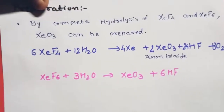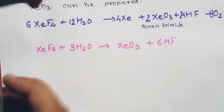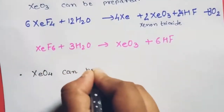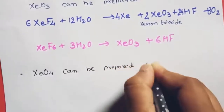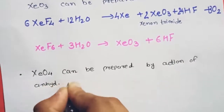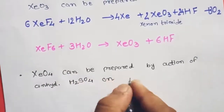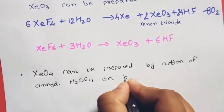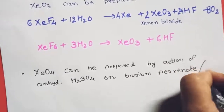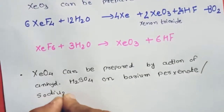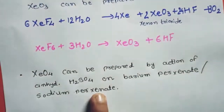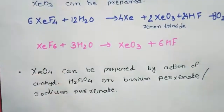Now let's look at the preparation of xenon tetroxide. XeO₄ can be prepared by the action of anhydrous H₂SO₄ on barium perxenate or sodium perxenate.